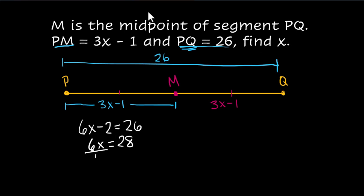Divide both sides by 6. X equals, well, 28 over 6. 6 doesn't go into 28 evenly, so I just need to reduce that. We're going to divide the top and the bottom by 2. And we get X equals 28 divided by 2 is 14. 6 divided by 2 is 3. And that would be my final answer.